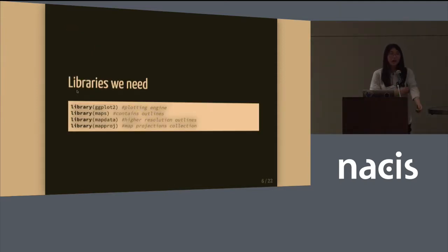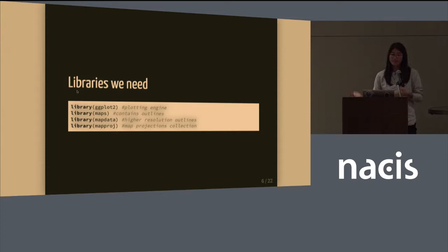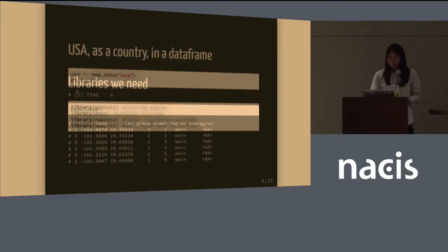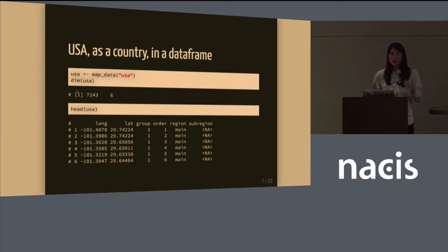How we get there is with some libraries I really enjoy using. The first is ggplot, one of the more modern graphics libraries in R. And then also maps, mapdata, and mapproj, which contain R's shape files in a sense but as a CSV within the library — that way we don't need to go extract a shape file from somewhere and import it, although you can with other libraries. This is the USA as a data frame because the maps, mapdata, and mapproj library contains a lot of common geographies you would want to use, like countries, states, and counties.